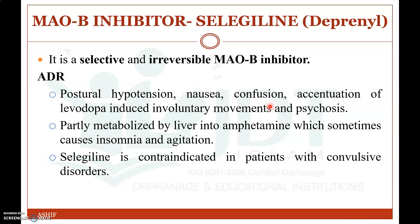The next drug class is MAO-B inhibitors like selegiline, a selective and irreversible monoamine oxidase B inhibitor. It prevents the degradation of dopamine, thereby increasing the amount of this neurotransmitter. Adverse drug reactions include postural hypotension, nausea, confusion, accentuation of levodopa-induced involuntary movements, and psychosis. It is partly metabolized by the liver into amphetamine, which can cause insomnia and agitation. Selegiline is contraindicated in patients with convulsive disorders.